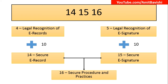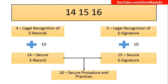Let's do a quick recap. Signature misuse: sections 71, 73, and 74. Section 71 is for giving wrong information by the applicant to the controller or certifying authority. Section 73 is the penalty for publishing an electronic signature certificate with false particulars — the issuer of the certificate has made a mistake. Section 74 is when you have the correct information and a correct signature, but you are using it for fraudulent purposes. For 14, 15, and 16: section 4 for e-records, section 5 for e-signatures; 4 plus 10 gives secure e-record (14), 5 plus 10 gives secure e-signature (15), and once records and signatures are secure, authentication and the issuing process must also be secure — section 16, secure procedures and practices. That's Part 4.